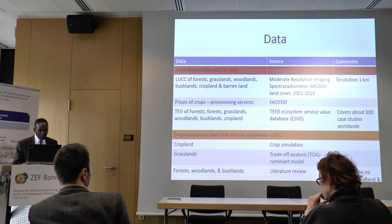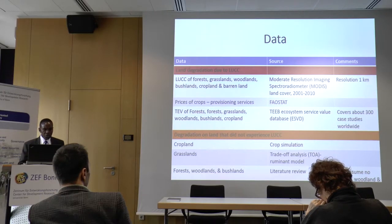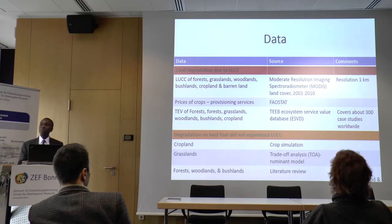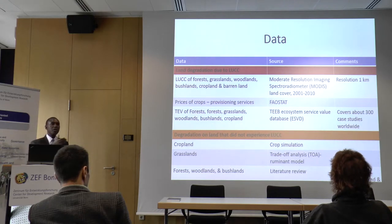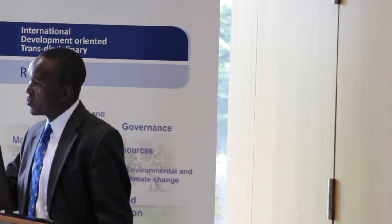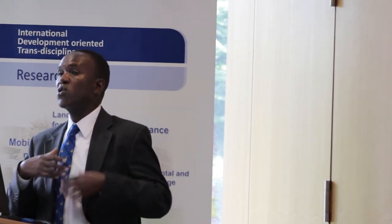For land use change degradation, we use MODIS data — the Moderate Resolution Imaging Spectroradiometer — covering 2001 to 2010. This data is much better than NDVI because it is ground-truthed, with a resolution of one kilometer compared to NDVI's eight kilometers. Being ground-truthed means that if MODIS says it is a forest, it is a forest. This gives us very good confidence in tracking land use change dynamics over time.